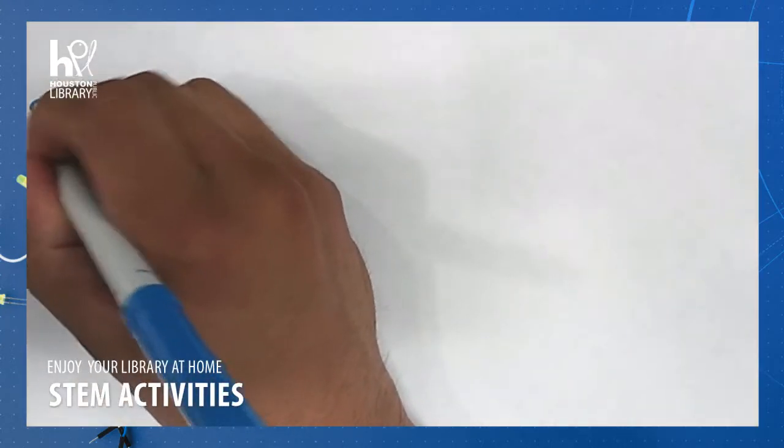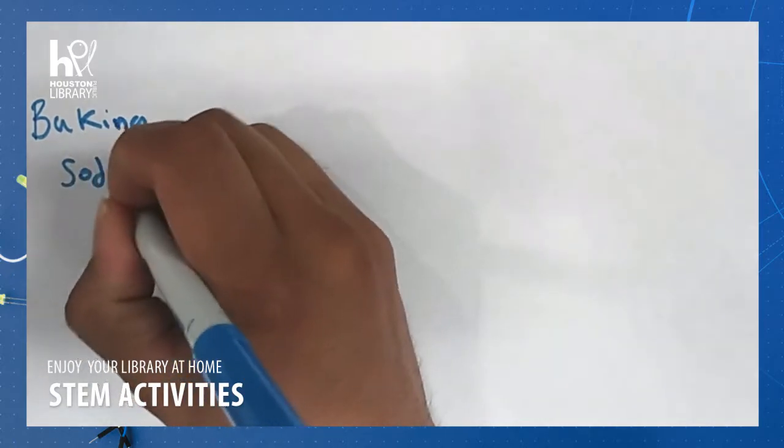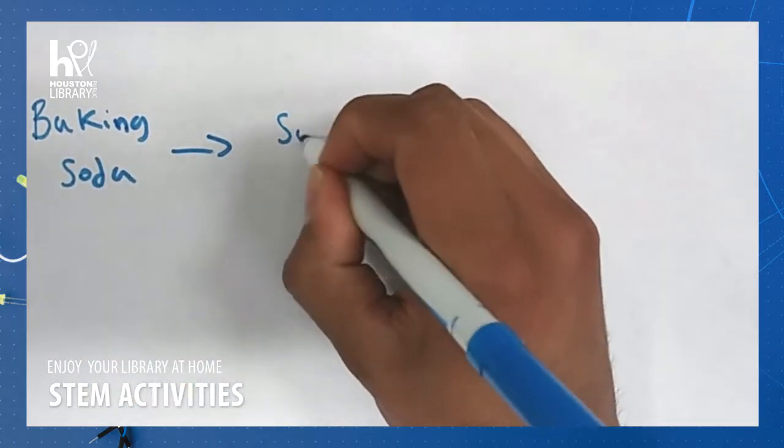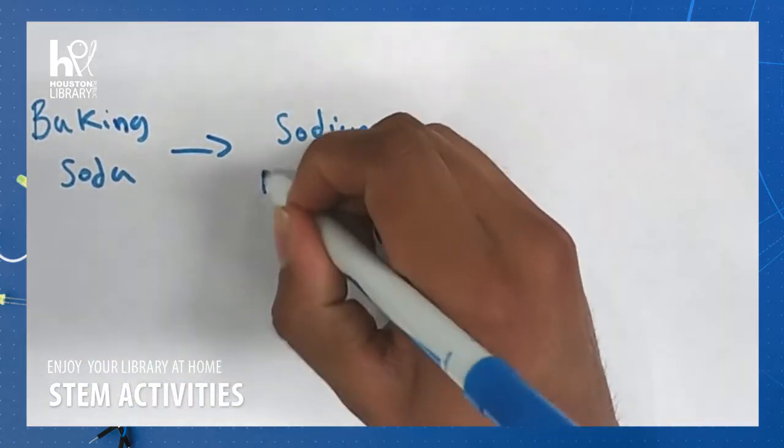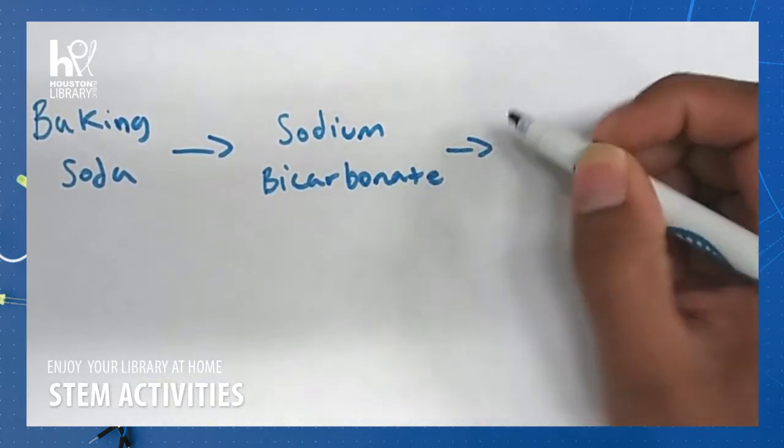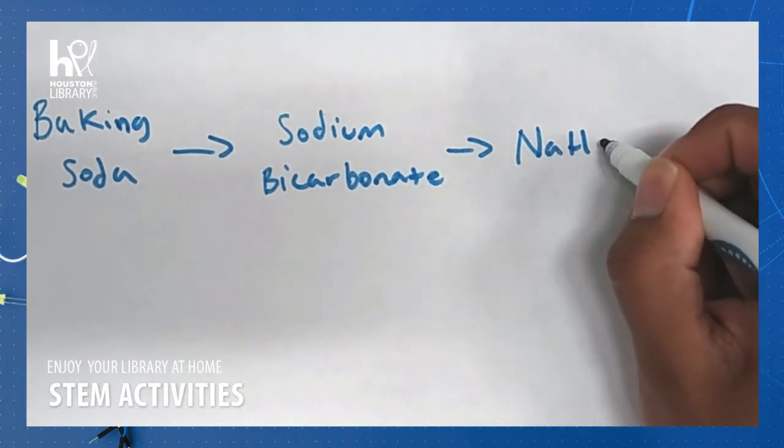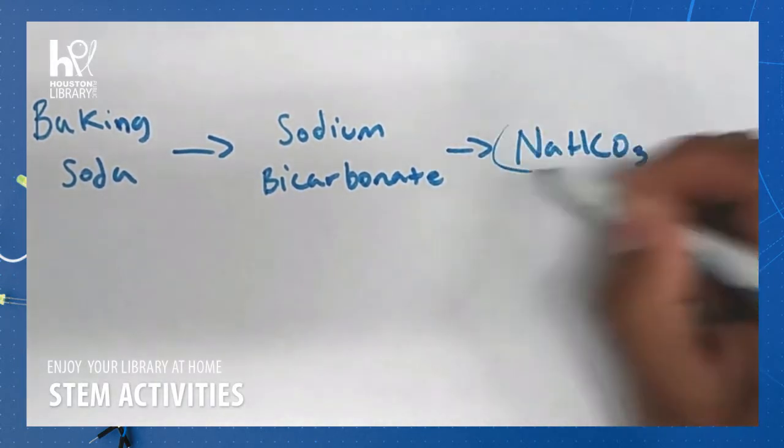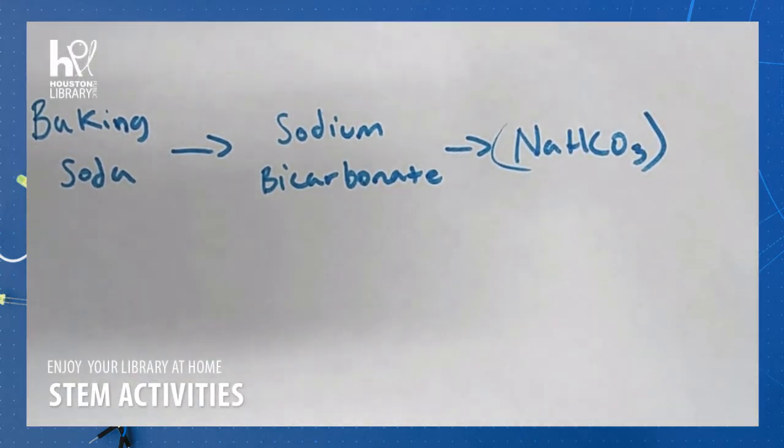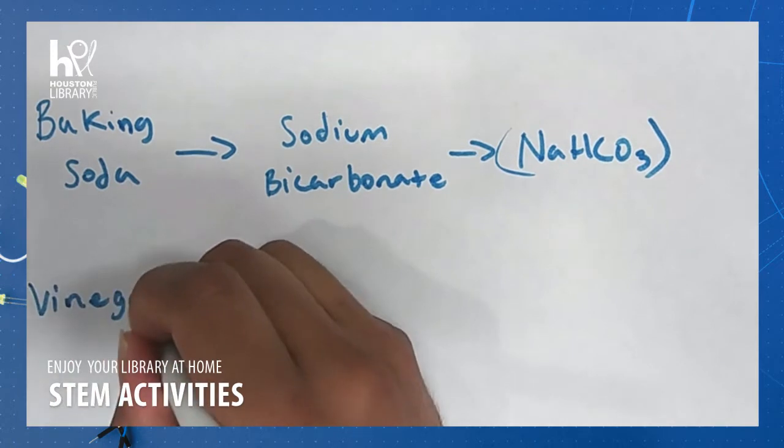Okay, so before we get started I'm going to give some background information on our ingredients. So the chemical name for baking soda is sodium bicarbonate and the chemical formula is NaHCO3. So what this means is that there is one atom of sodium, one atom of hydrogen, one atom of carbon, and three oxygen atoms in the formula which make up baking soda.